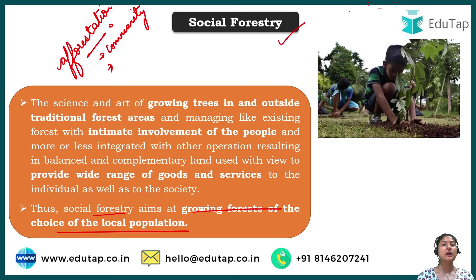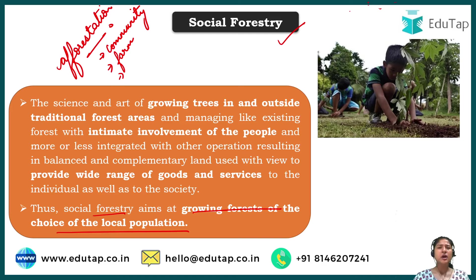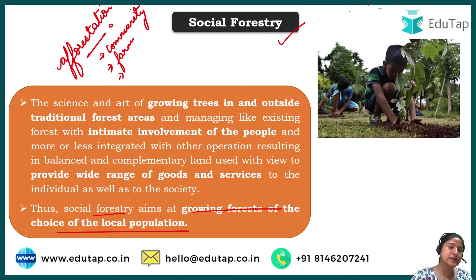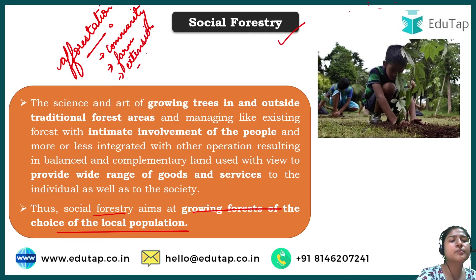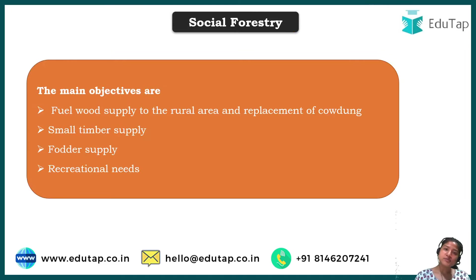Social forestry can be further divided into three types. First is community forestry, where the community plants trees of their requirements. Second is farm forestry, where farmers plant trees in their fields — possibly for shade during intercultural operations or other reasons. Third is extension forestry, which involves planting trees across railway lines or similar extended areas.